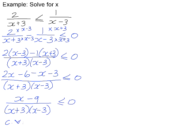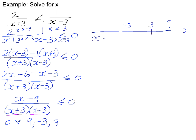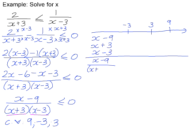Now if we look at our critical values — these are the values that make the numerator zero and the denominator zero. The value of x that makes the numerator zero is 9, because 9 minus 9 is zero. In the denominator, we have two separate factors: x equals negative 3 makes the first factor zero, and x equals positive 3 makes the second factor zero. We now plot these on a number line — negative 3, 3, and 9 — and look at what happens to (x minus 9) and each denominator factor at these critical values.